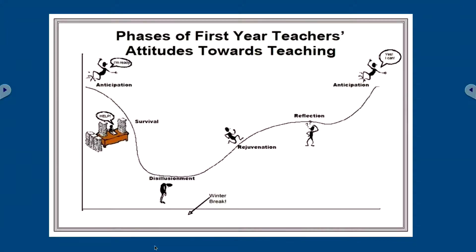We use the teacher phases cycle — anticipation, survival, disillusionment, rejuvenation, reflection, and back to anticipation. We focus on these phases in our discussion posts where veteran teachers, support staff, and mentees can discuss where they fall and how to shift their perception. Right now coming back from winter break we're climbing from disillusionment back up toward anticipation at the end of the year. A big piece is reflecting on what's working and what's not working in classrooms.